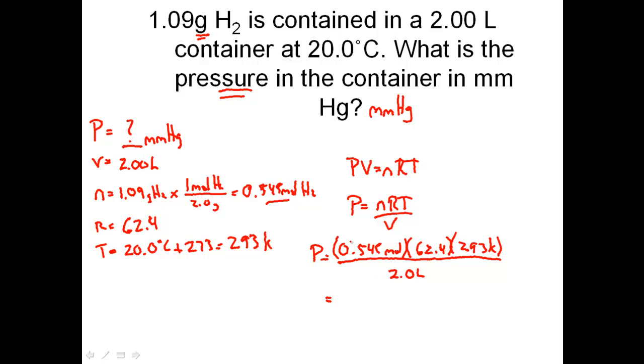0.545 times 62.4 times 293 divided by 2 gives us a pressure of roughly 4,982 millimeters of mercury. Given all these variables - 20 degrees Celsius, a 2 liter container, 1.09 grams of H2 which is 0.545 moles - the pressure inside that container is 4,982 millimeters of mercury.